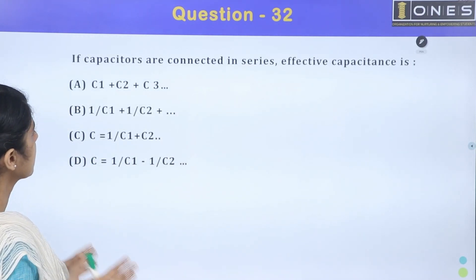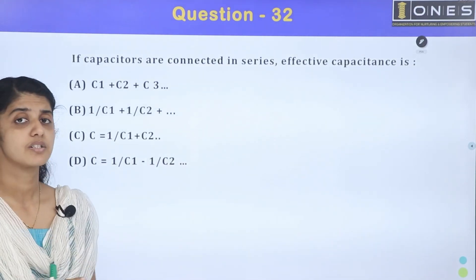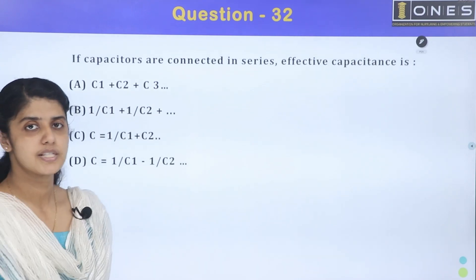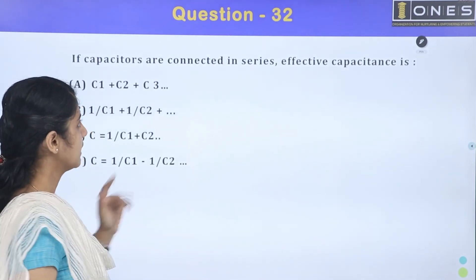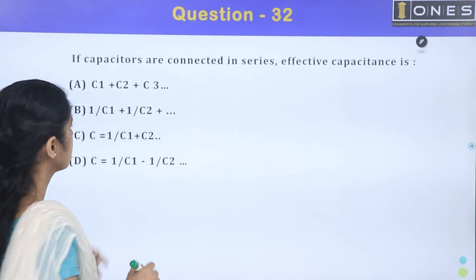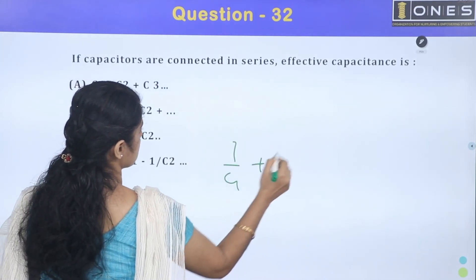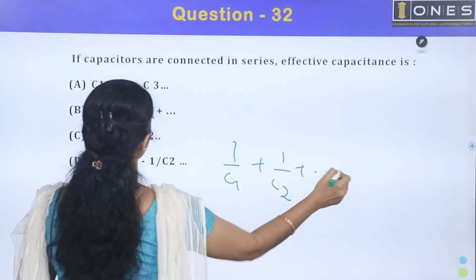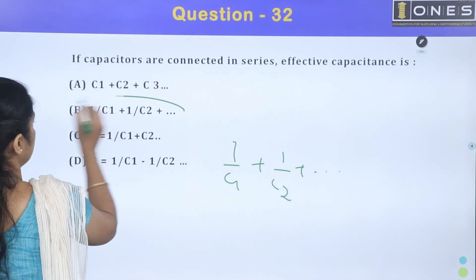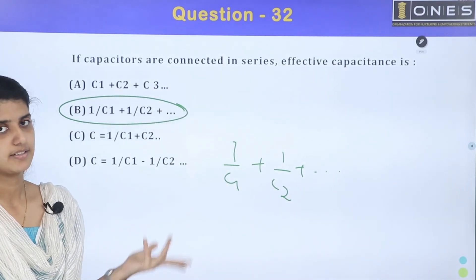Next question: if capacitors are connected in series, the effective capacitance is given by 1/C = 1/C1 + 1/C2 + ... etc. Option B.